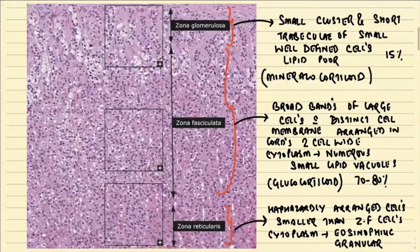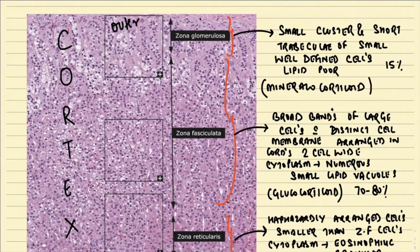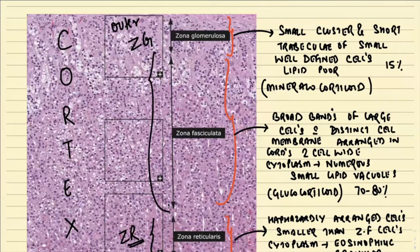Now if we enlarge the cortex, the adrenal cortex can be divided into three major regions. On the outer aspect, as you can appreciate, there is the zona glomerulosa. More towards the inner aspect you have the zona reticularis, and in between — forming the largest section — is the zona fasciculata. The outermost area facing the capsule is the zona glomerulosa.